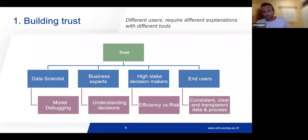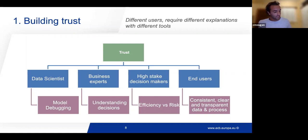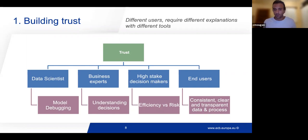For end users, we found that they actually use our data, so they are expecting the data to be consistent, clear, and transparent. If they see something in real life, they expect it to appear in the data. One example is the coronavirus pandemic — we expected users to see that the securities of several countries were dropping, changing, or increasing. So if they don't see this, they need an explanation of why this is not happening.